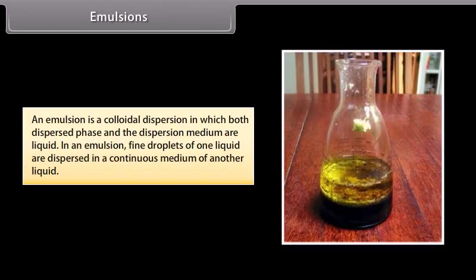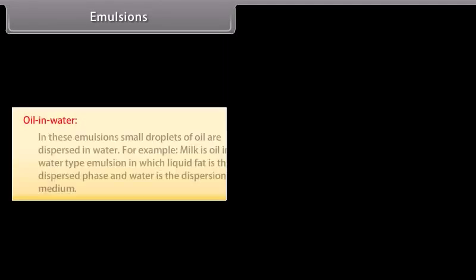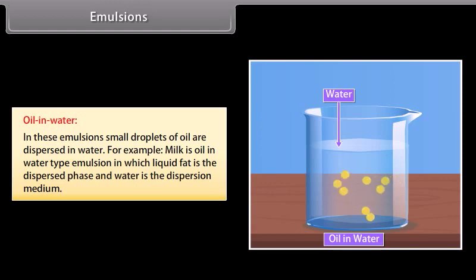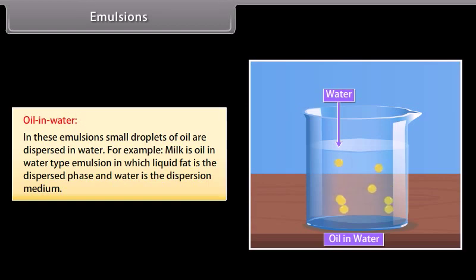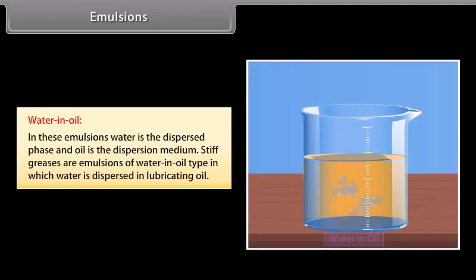An emulsion is a colloidal dispersion in which both the dispersed phase and the dispersion medium are liquid — fine droplets of one liquid are dispersed in a continuous medium of another liquid. Emulsions are of two types: oil in water (e.g., milk, where liquid fat is the dispersed phase and water is the dispersion medium) and water in oil (e.g., stiff greases, where water is dispersed in lubricating oil).